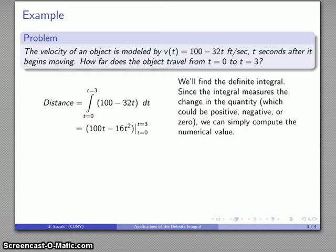So I find an anti-derivative, I evaluate it at the top limit and at the bottom limit, and I find the difference: 156. And I should not forget to include the units there; we've already determined that the units are going to be in feet.